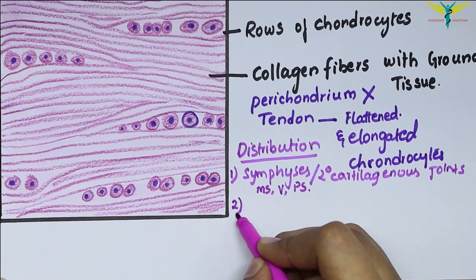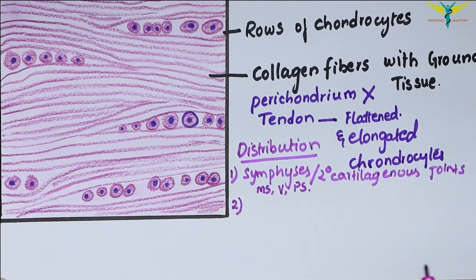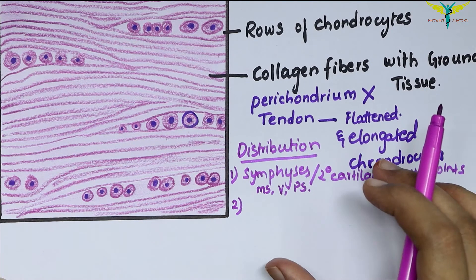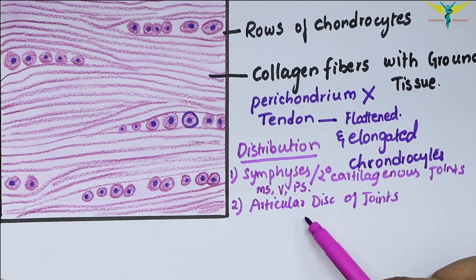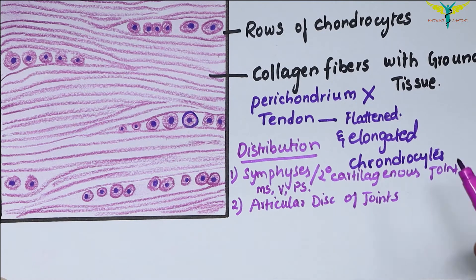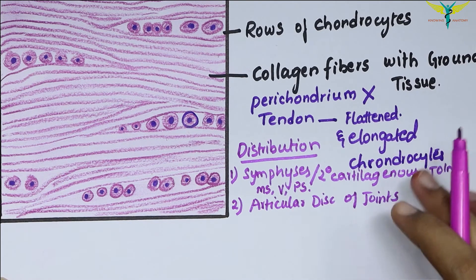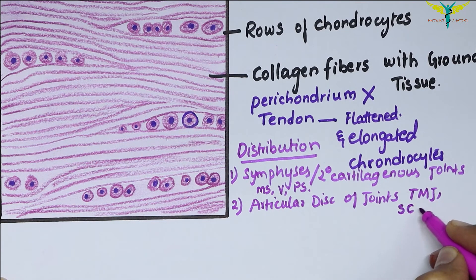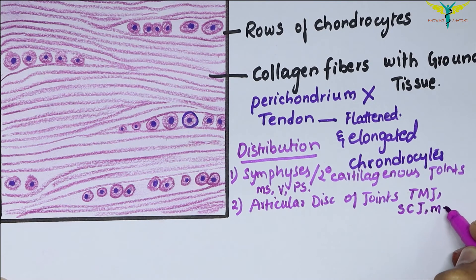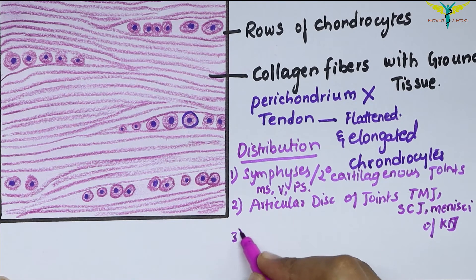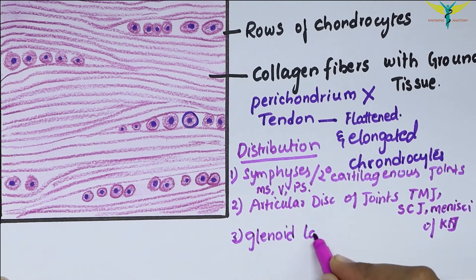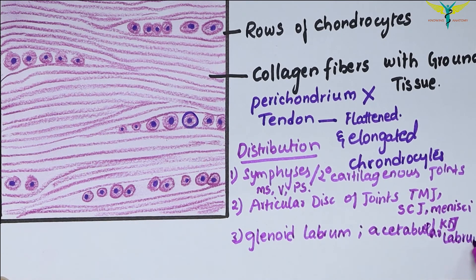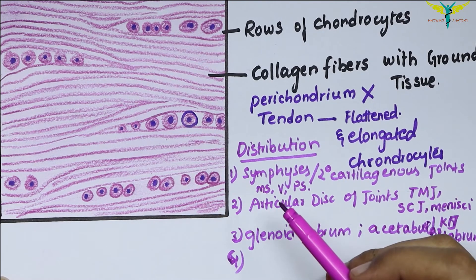Fibrocartilage is also present in some synovial joints where the joint cavity is partially or completely subdivided by an articular disc. These articular discs are made up of fibrocartilage. Examples are the temporomandibular joint (TMJ), sternoclavicular joint, and menisci of the knee joint. Fibrocartilage is also present in the glenoid labrum in the shoulder joint and the acetabular labrum in the hip joint.